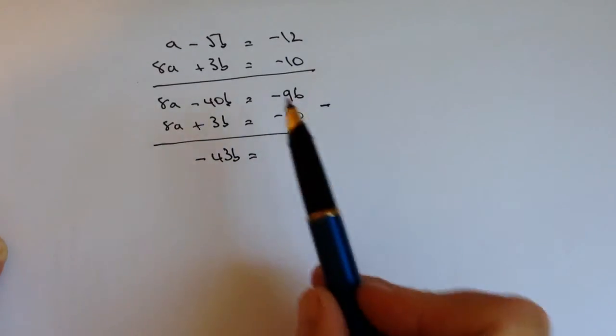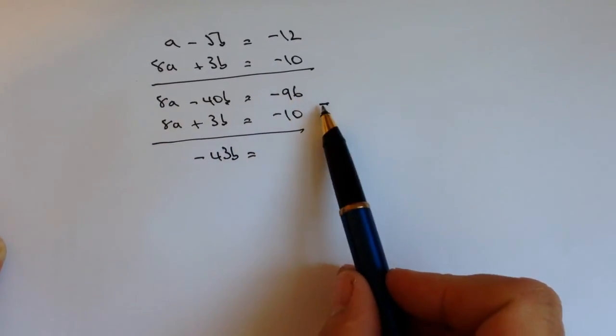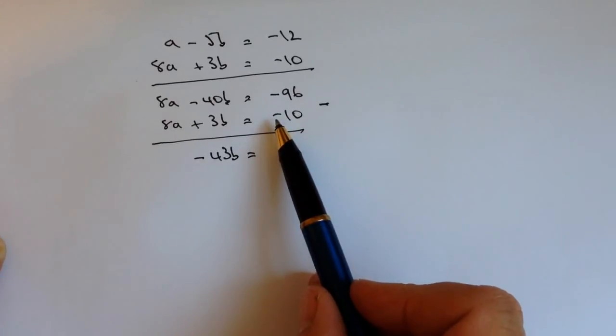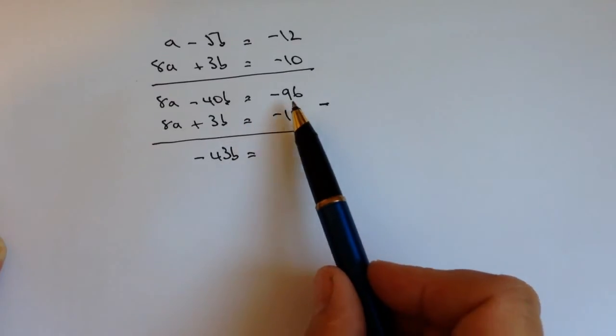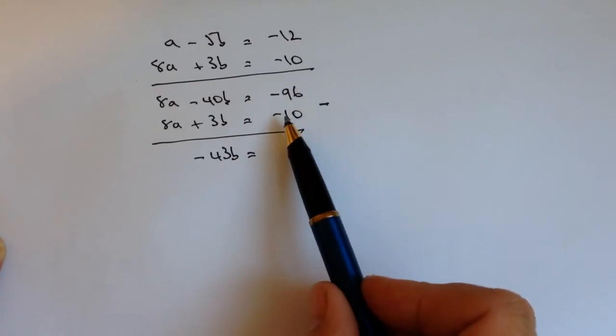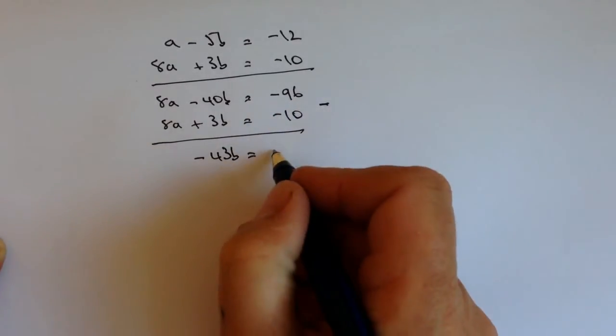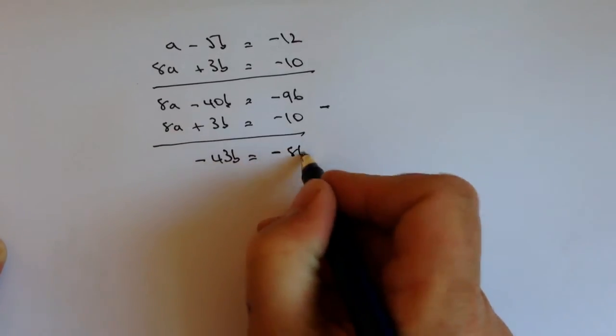And that's going to equal -96, and then I've got minus a minus, so that becomes a plus. Where you've got two minus signs together it becomes a plus. So it's going to be -96 + 10. Well, that's still going to be a minus, but it's going to be -86.